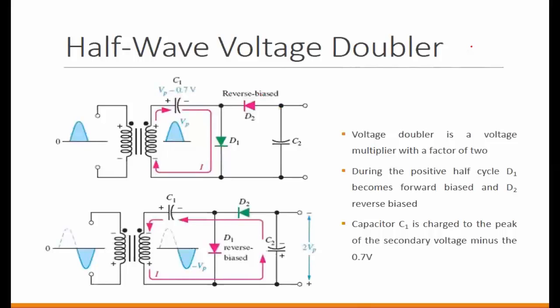So what usually will happen is, during the, when the input signal is coming positive, you can tell that D1 is forward bias, correct? So let's say the input is positive cycle. So D1 will be forward, but D2 will be reverse, correct? So what usually happens is, this allows this capacitor to charge. Does that make sense?